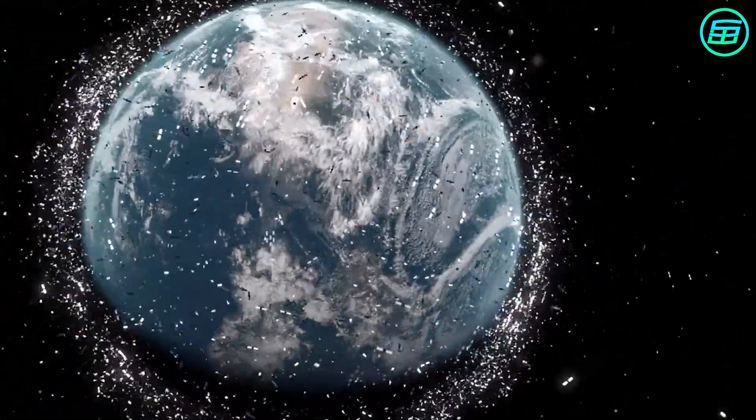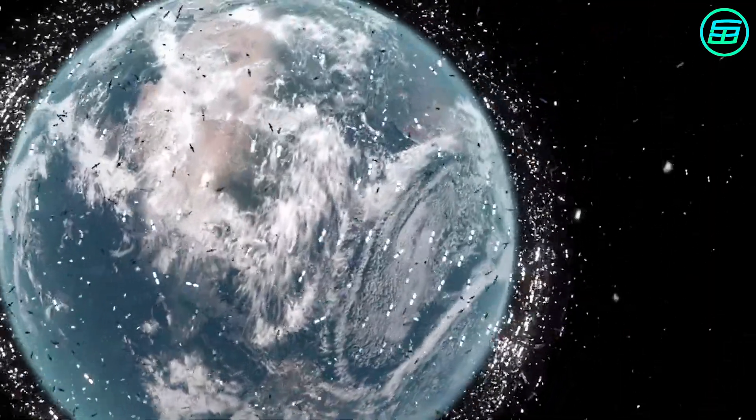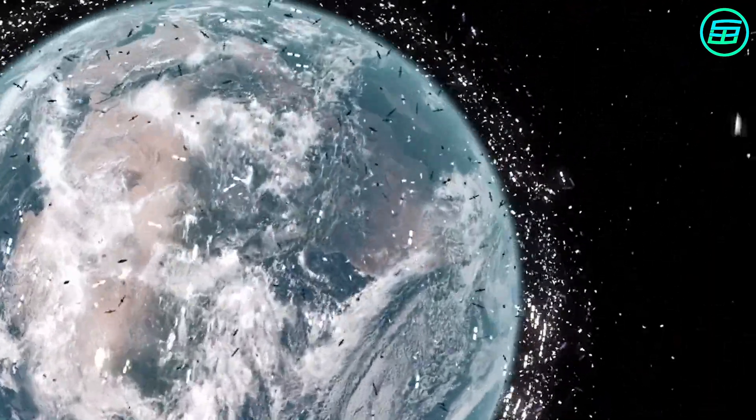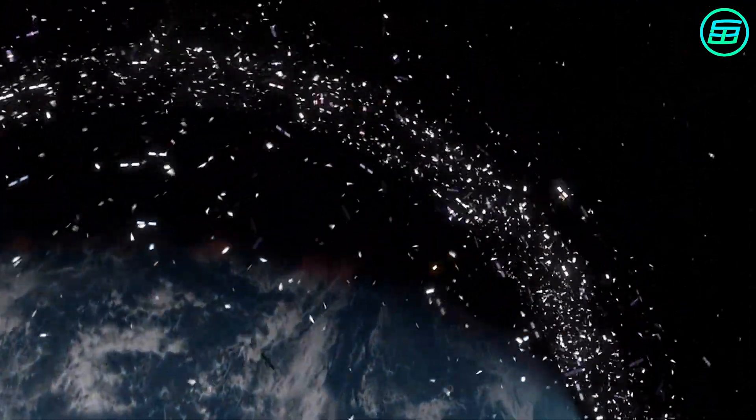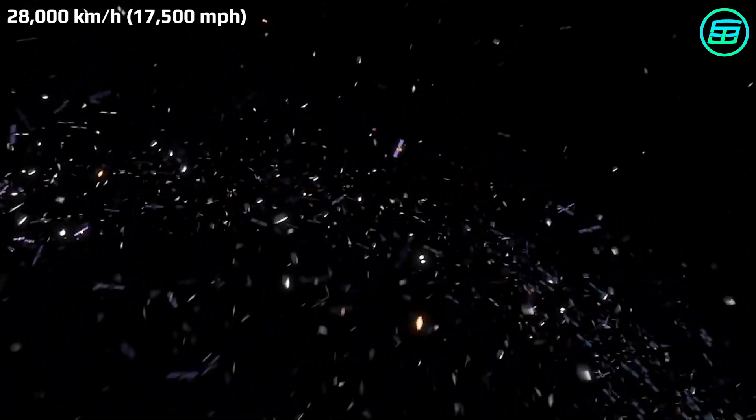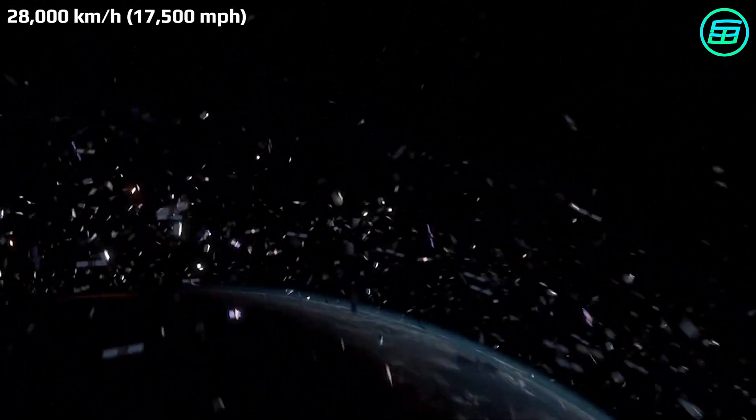You may wonder how a 1 centimeter piece of debris could pose any kind of threat. The problem is the speed at which it moves. In low Earth orbit, objects are traveling at about 28,000 kilometers or 17,500 miles per hour, roughly 10 times faster than a bullet.